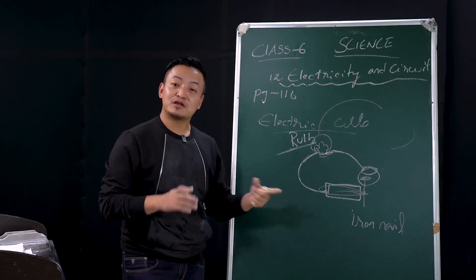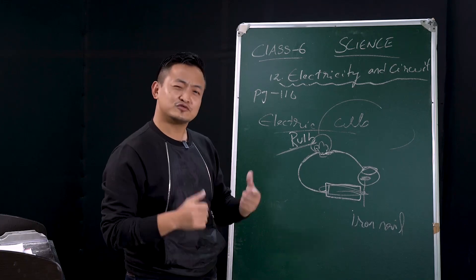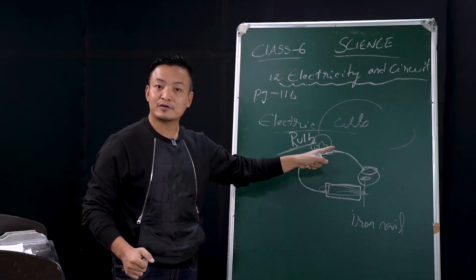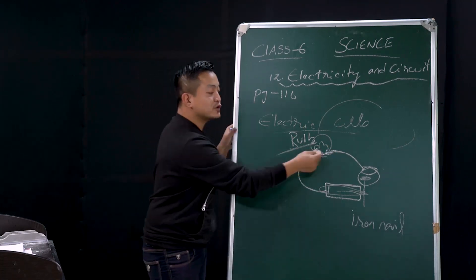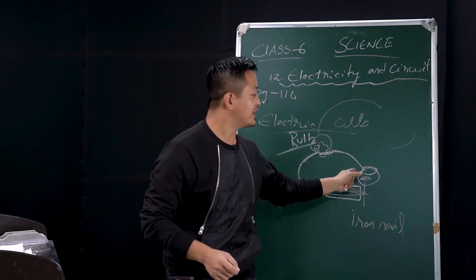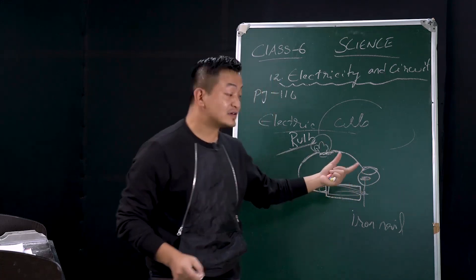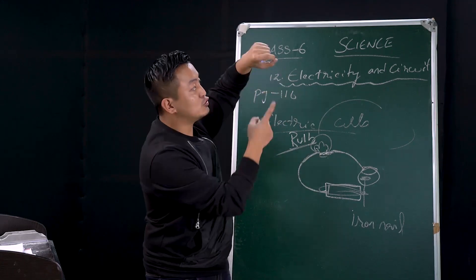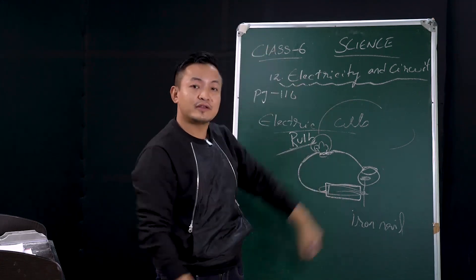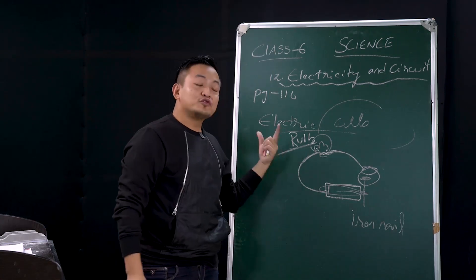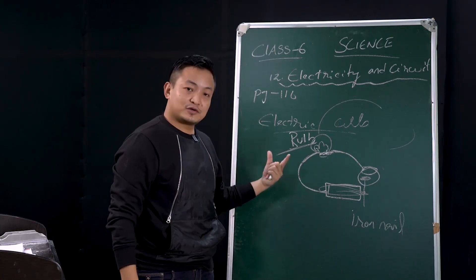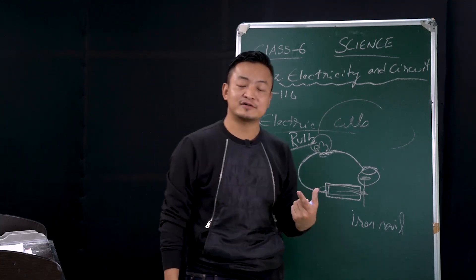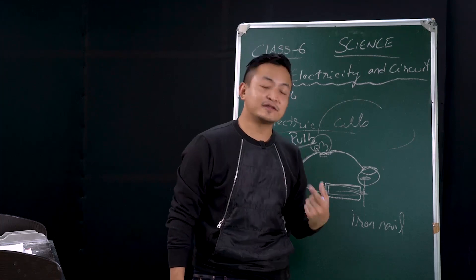This is how you can make your own torchlight. You just need a battery, an iron nail, and a wire to connect to the bulb. At the end of the wire, make a loop so you can insert it into the head of the iron nail. Now you understand how a simple circuit works.